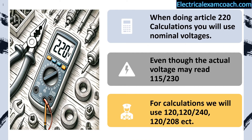When doing article 220 load calculations, we're gonna be using nominal voltages. Although our actual meter reading might be 115 or 130, for our calculations we're gonna be using nominal system voltages like 120, 240, 120/208. It makes it a lot easier to do these calculations, not having to guess or wonder what the actual voltage readings might be.